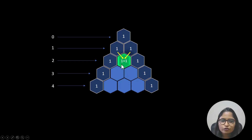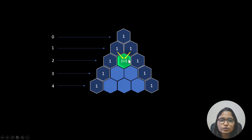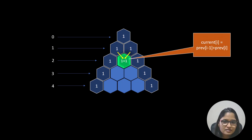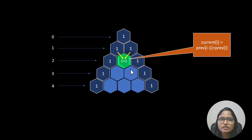Each cell's value comes from the previous row. For the cell at index (2, 1), the value is 1+1, coming from indices (1, 0) and (1, 1) of the previous row. This implies that the current value at index i in a row comes from index i and index i-1 of the previous row. Let's apply this assumption to all other values to verify.